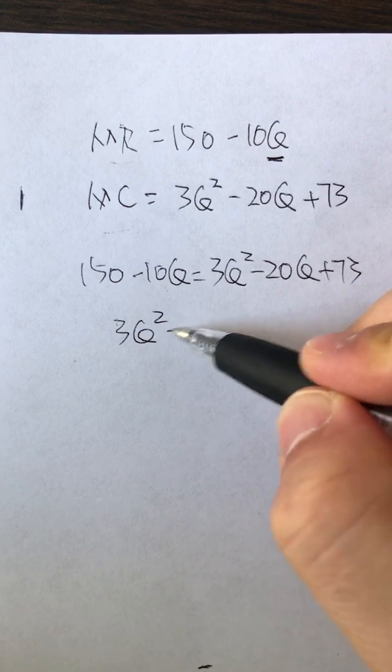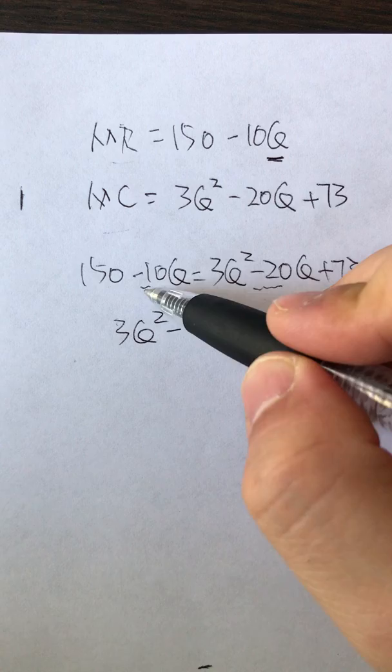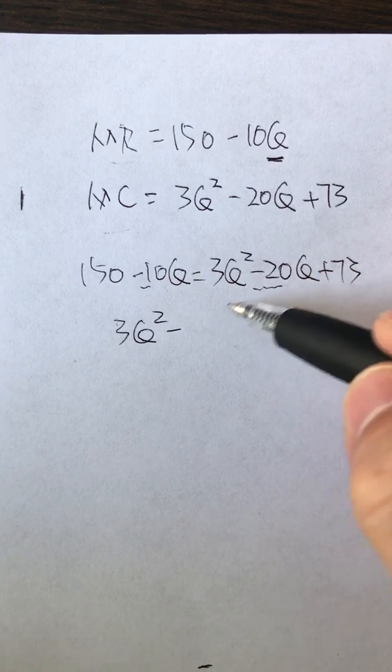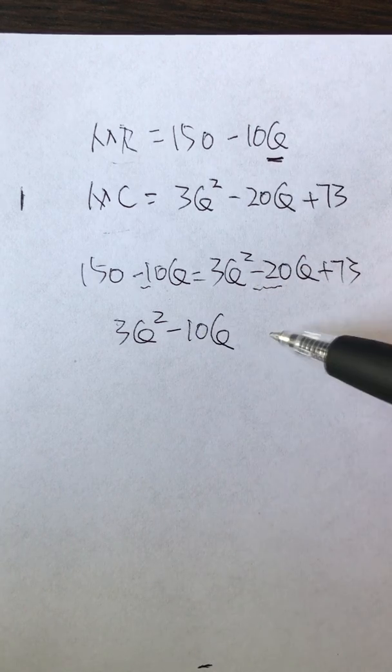We have 3Q squared minus, see here's minus 20, here's minus 10. When you move from left to right you change the sign of negative 10 to positive 10, so minus 20 plus 10 gives you minus 10, and the same thing for the constant.